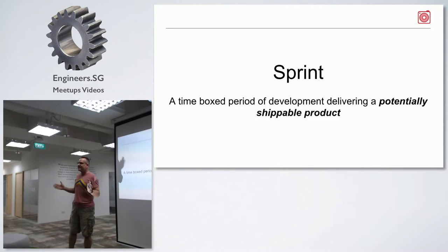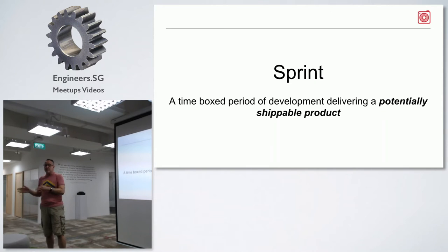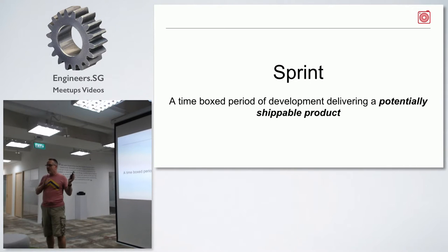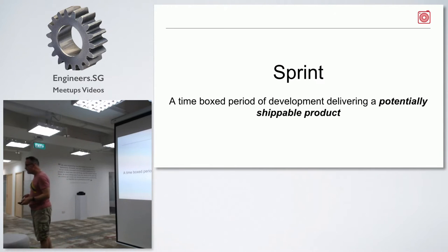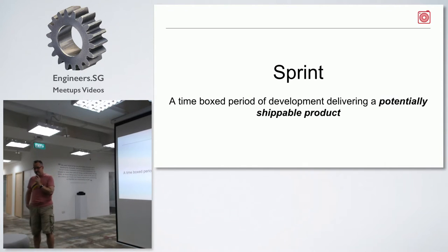Be very clear that you separate engineering decisions from business decisions. Whether you ship it or not — that is a business decision. Whether you call this version 4.0 or not — that is a business decision. Whether it is ready to go and whether you've built it — that is an engineering decision. Any questions on this recap?